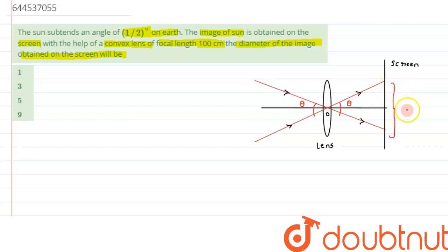We have been asked to calculate this value of x, the diameter. We've studied that when light rays come from infinity, the image is formed at the focal length. So we have placed the screen at the focal length, meaning this distance is the focal length.